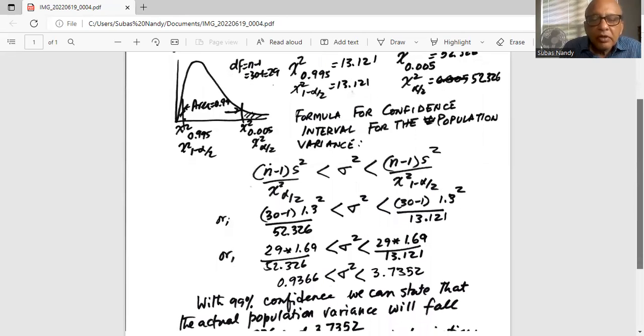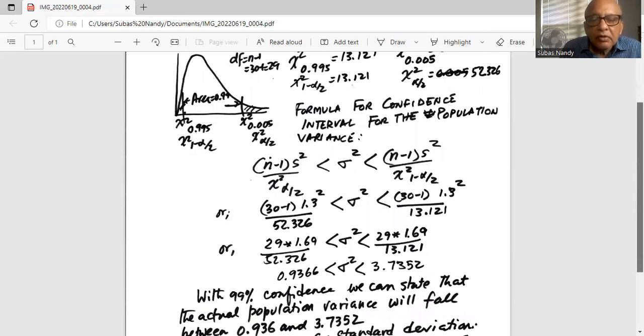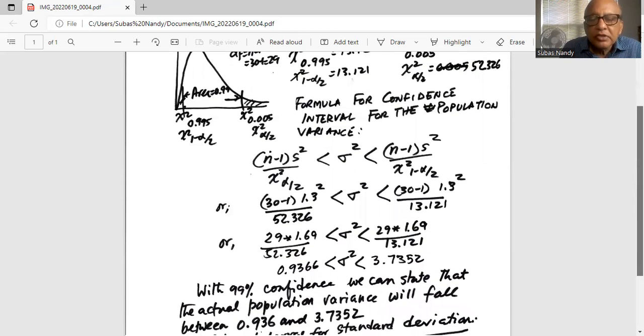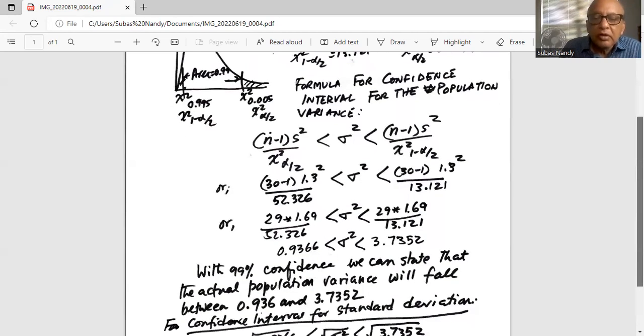And we simplify further. 29 times 1.69 divided by 52.326 is the lower boundary for the variance and the upper boundary for the variance interval is 29 times 1.69 divided by 13.121. When you simplify it the lower boundary works out as 0.9366 and the upper boundary works out as 3.735.